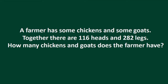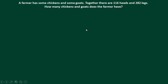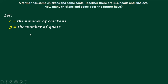A farmer has some chickens and some goats. Together there are 116 heads and 282 legs. How many chickens and goats does the farmer have? To solve this, we assign variables: let C be the number of chickens and G be the number of goats. From the heads: C + G = 116. From the legs: 2C + 4G = 282.